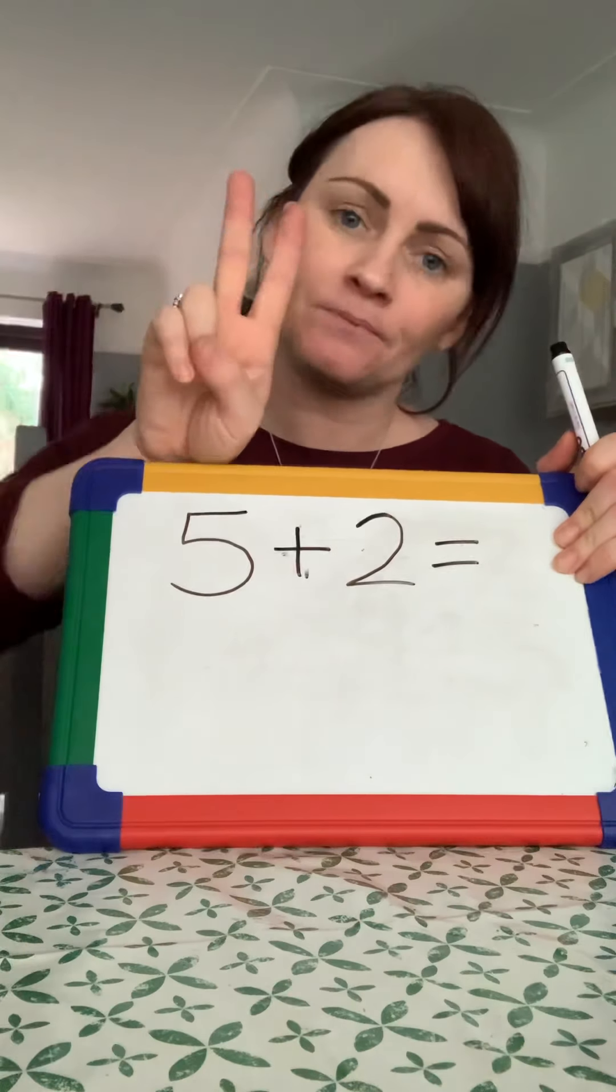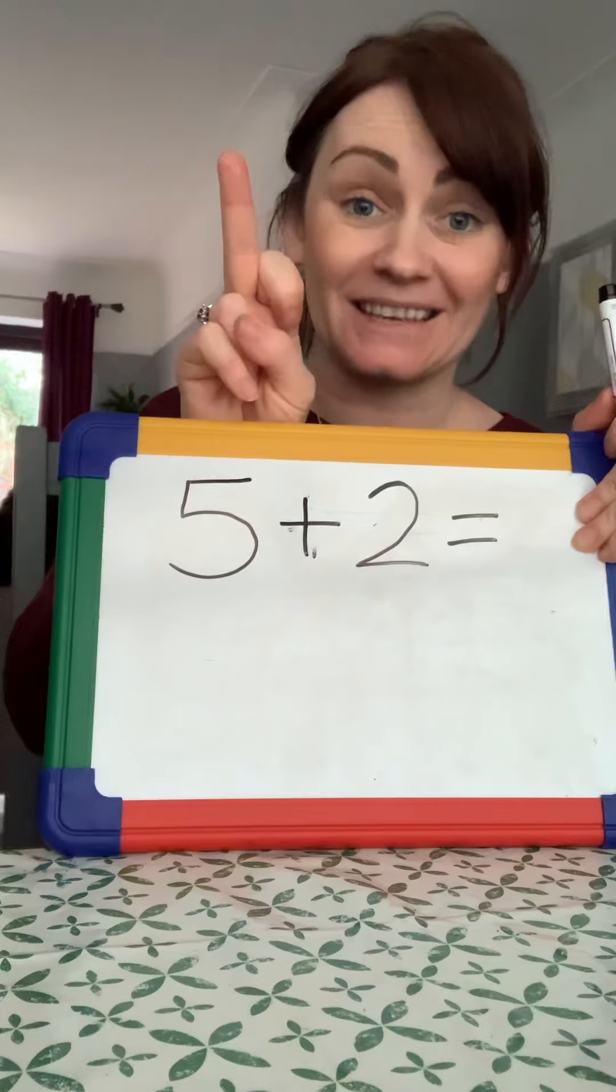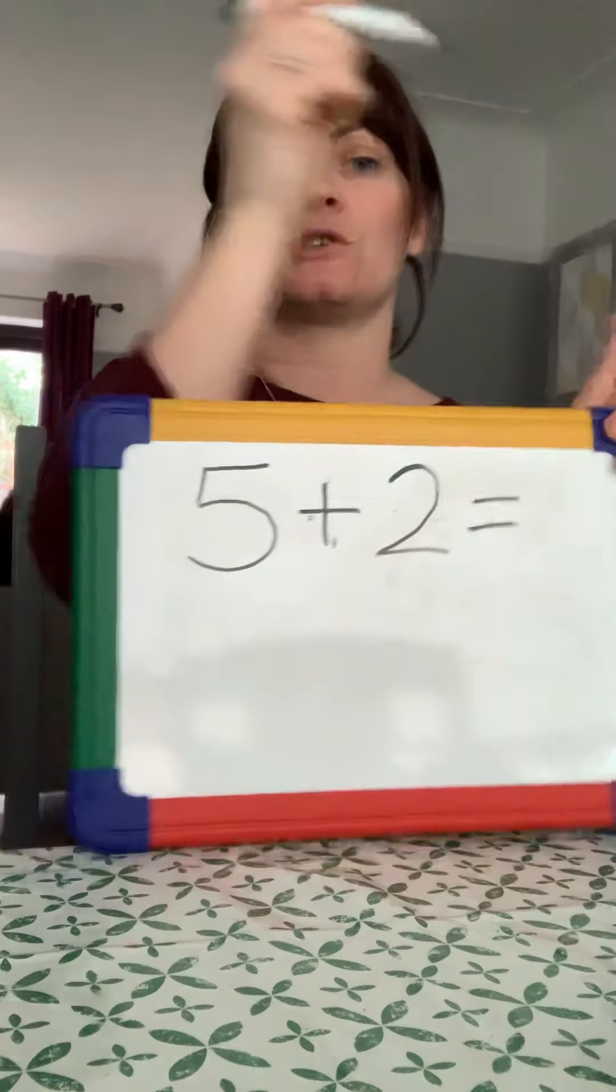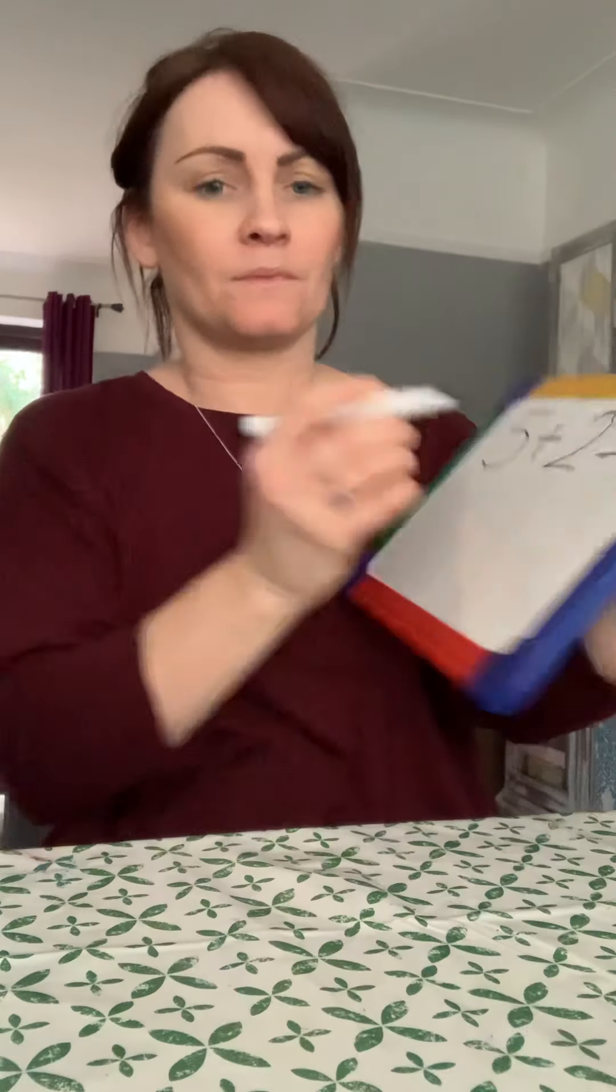Put 5 in our heads. Show 2. Let's count on. 5, 6, 7. So, 5 plus 2 equals 7.